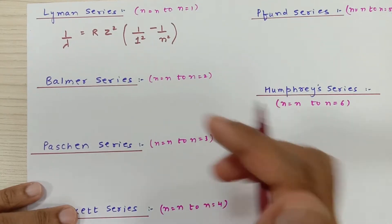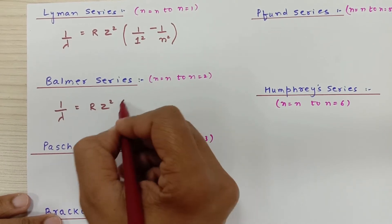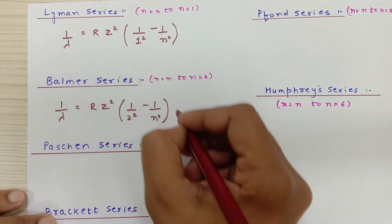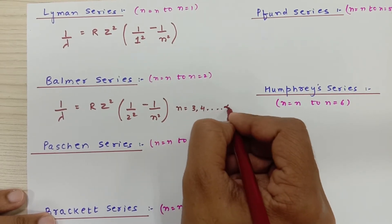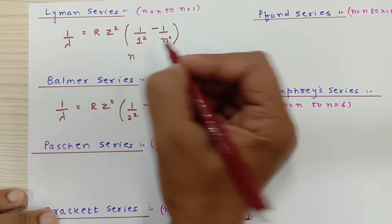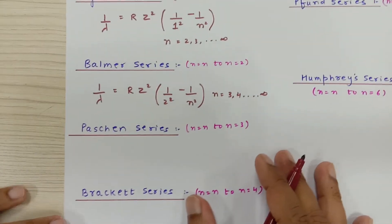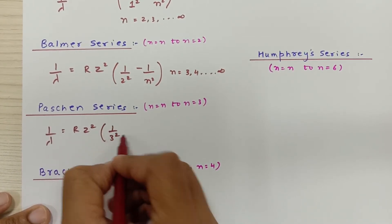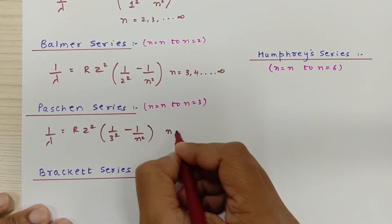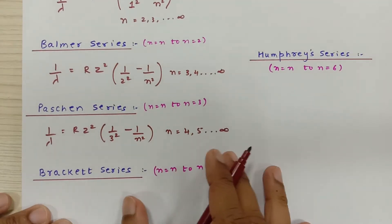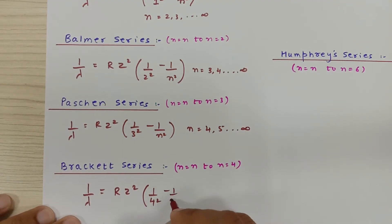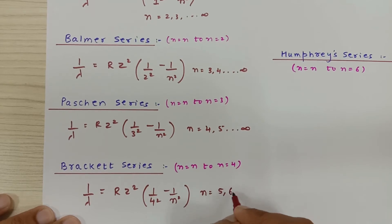For the Balmer series: 1 upon lambda equals R times Z² times (1/2² minus 1/N²), where N can be 3, 4, 5, ... up to infinity. For the Paschen series: 1 upon lambda equals R times Z² times (1/3² minus 1/N²), where N can be 4, 5, ... up to infinity. For the Brackett series: all electrons fall into the fourth orbit, so 1 upon lambda equals R times Z² times (1/4² minus 1/N²), where N can be 5, 6, ... up to infinity.